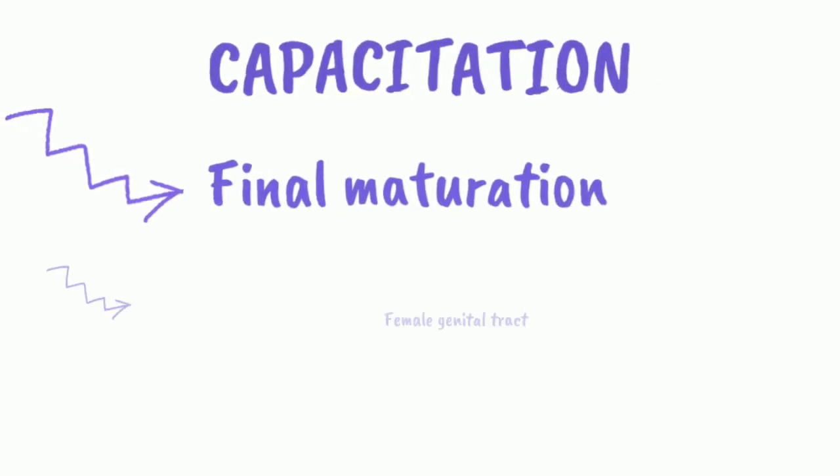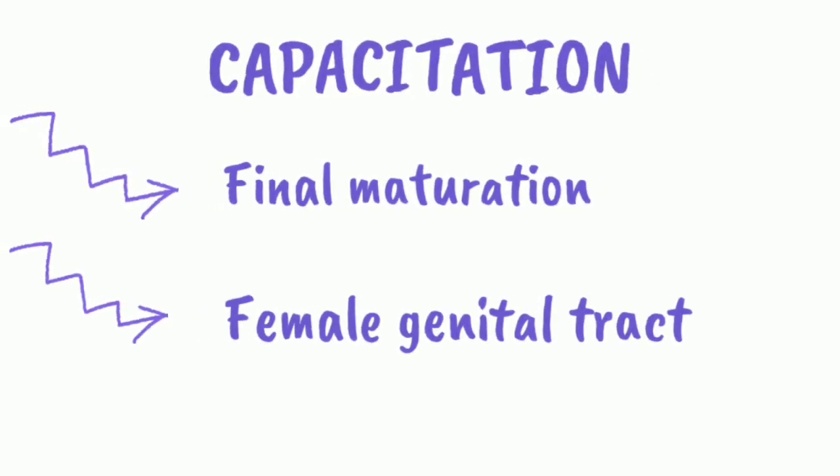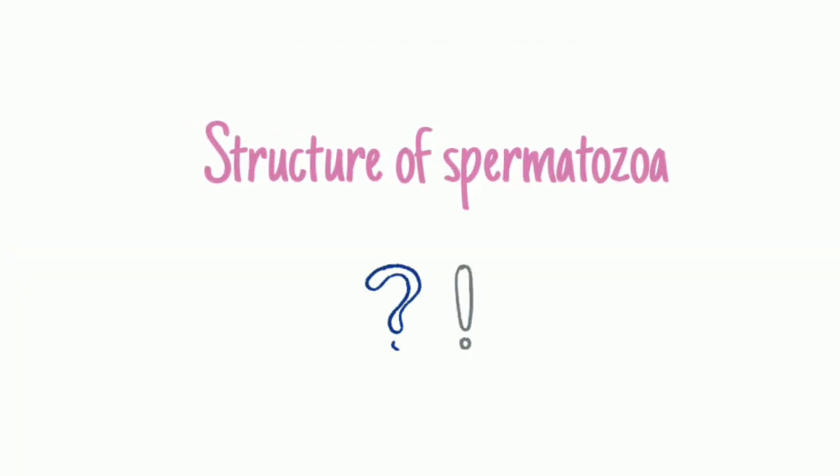The maturation in the epididymis is not the final maturation. The final maturation takes place in the female genital tract and that is called capacitation. Now we'll have a look at the structure of the mature spermatozoan.